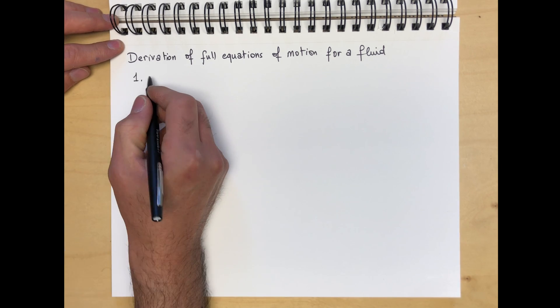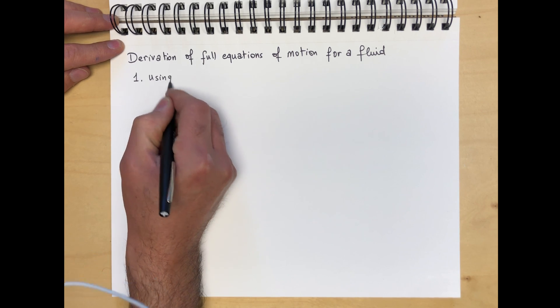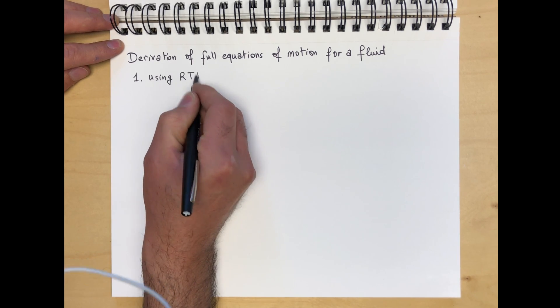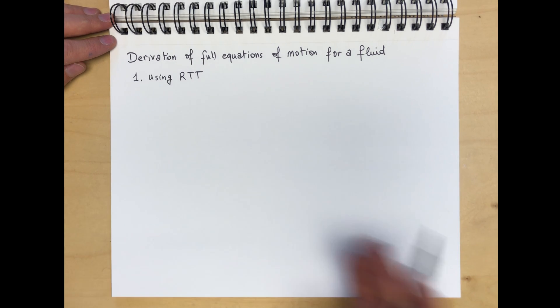The first approach, we will use the Reynolds transport theorem using RTT. We will take the integral form, write all the integrals as volume integrals, and then make our usual assumption that the volume is arbitrary.